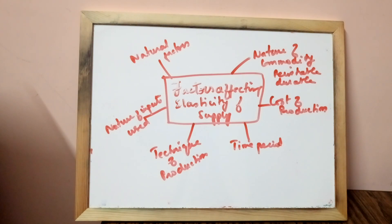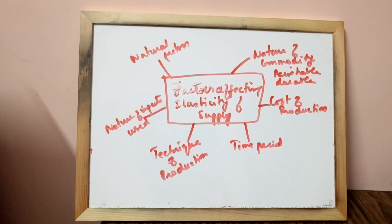Perishable commodities like vegetables and fruits have inelastic supply because they cannot be stored and have to be disposed of within a very short period, irrespective of their prices. So elasticity depends on the nature of commodity — durable goods and perishable goods.